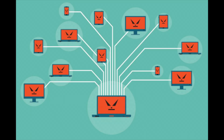To disguise themselves, bots may be distributed through a botnet, meaning copies of the bot are running on multiple devices. Because each device has its own IP address, botnet traffic comes from multiple different IP addresses, which makes it difficult to identify and block the source of the malicious bot traffic.